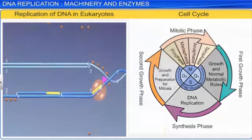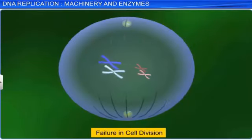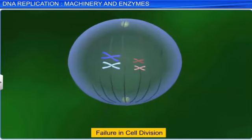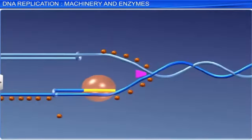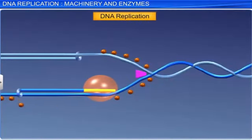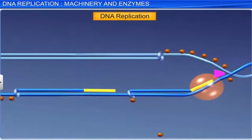The cell cycle too needs to be coordinated with the replication process, or a chromosome anomaly may occur. For example, a failure in cell division after DNA replication results in an inheritance disorder, as polyploidy. Therefore, the process of DNA replication, which is the basis of biological inheritance, is conducted with accuracy, with the help of various enzymes, in a determined manner.